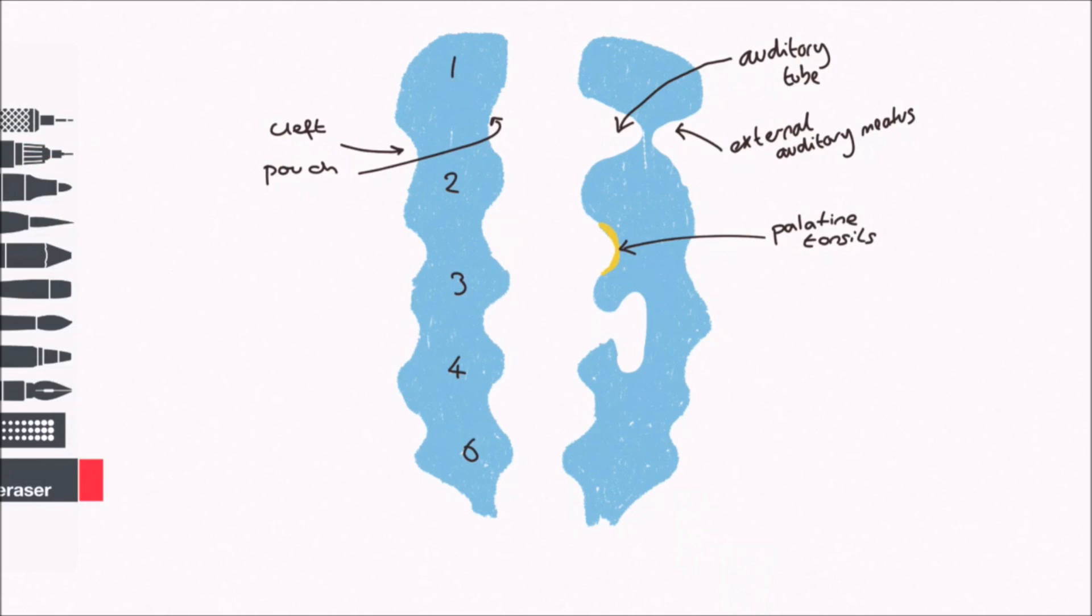The third pouch extends and bifurcates to form a dorsal and ventral wing. In the fifth week, the ventral region differentiates into thymus, and the dorsal region forms an inferior parathyroid gland.